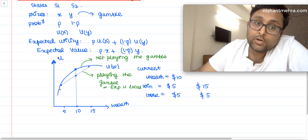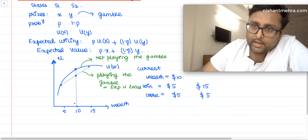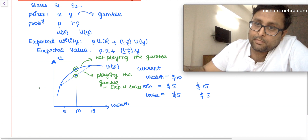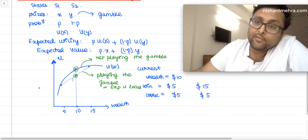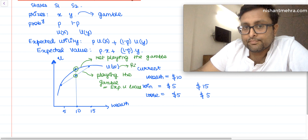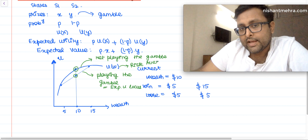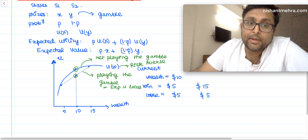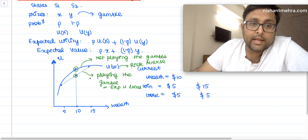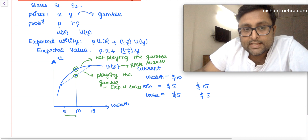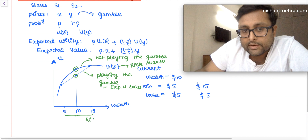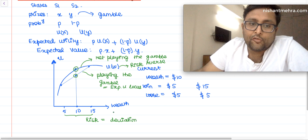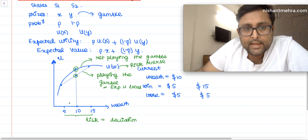Say my current wealth is 10 dollars. If I win, I get 5 dollars more, making wealth 15 dollars. If I lose, I lose 5 dollars, making wealth 5 dollars. When not playing the gamble my utility is higher than when playing the gamble — this means I am risk averse. Risk is measured by how far these outcomes are spread around the mean, i.e., the variance or standard deviation.